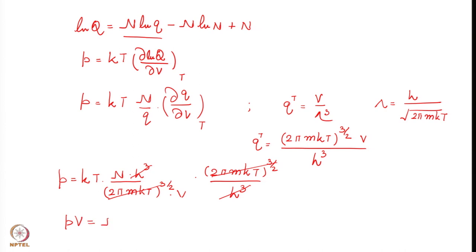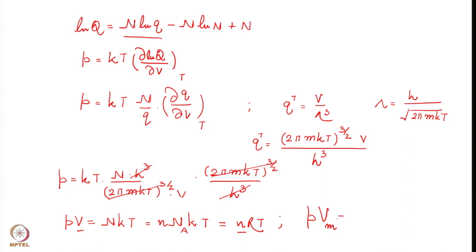Rearranging, we get PV = NkT. Since k × N_A = R, this gives PV = NRT. Taking N as the number of moles and V/N as molar volume V_M, we have PV_M = RT.